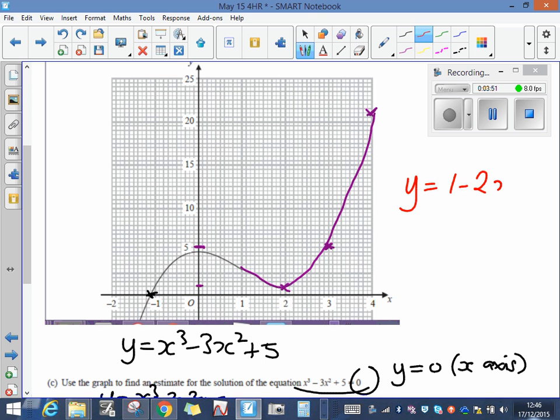I could make a table of values, might be the easiest way of doing it. Let's put in some values. When x is 0, y is going to be 1 take away 2 zeros, well 1 take away nothing is 1, so my line goes through 0, 1. Or I could use the fact that the equation is in the form y equals mx plus c. The intercept is 1 here, so I know that I've got a graph that goes through 1.